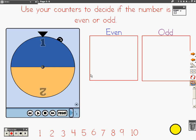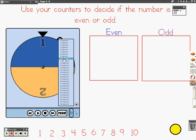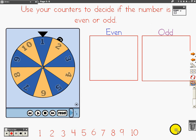Let's practice. I'm going to spin the spinner. You get out some counters. You decide if the number is even or odd. Here we go.